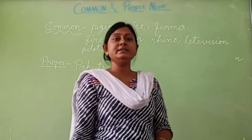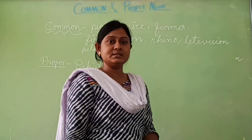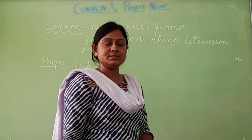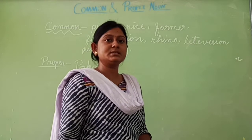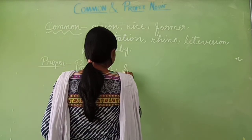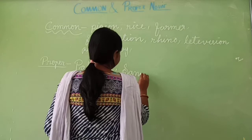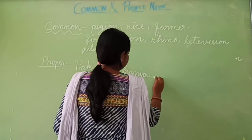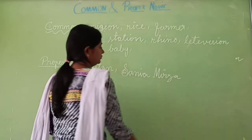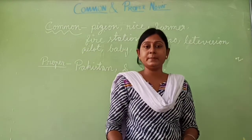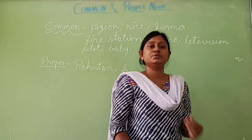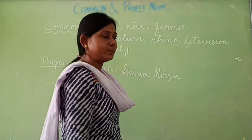Next is Sanya Mirza. Sanya Mirza is the name of a person. All persons are not Sanya Mirza — there are many persons, but Sanya Mirza is a special name, so it is a proper noun. Next is Republic Day. Republic Day is a special day. Every day is not Republic Day, so it is a special day and a proper noun.